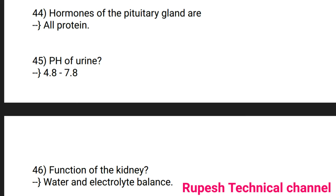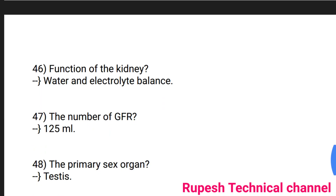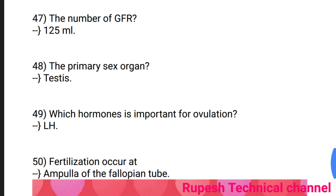Question number 47: The number of GFR is 125 ml. Question number 48: The primary sex organ is the testis. Question number 49: The hormone important for ovulation is LH. Question number 50: Fertilization occurs at the ampulla of the fallopian tube.